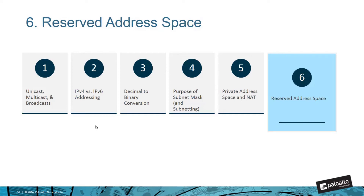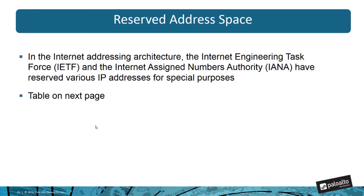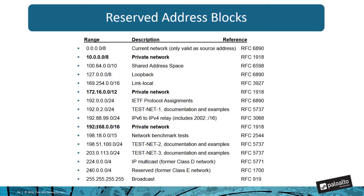The last section is what we call the reserved address space — addresses set aside and not used for general routing. The IETF, or Internet Engineering Task Force, and the IANA, the Internet Assigned Numbers Authority, have set aside certain ranges for special purposes. Here we see the reserved address blocks: Class A, Class B, and Class C private network ranges, with associated RFC numbers as reference. We also see other ranges such as loopback, link-local, the multicast range at 224, the reserved or experimental range at 240, and the broadcast range at the bottom.